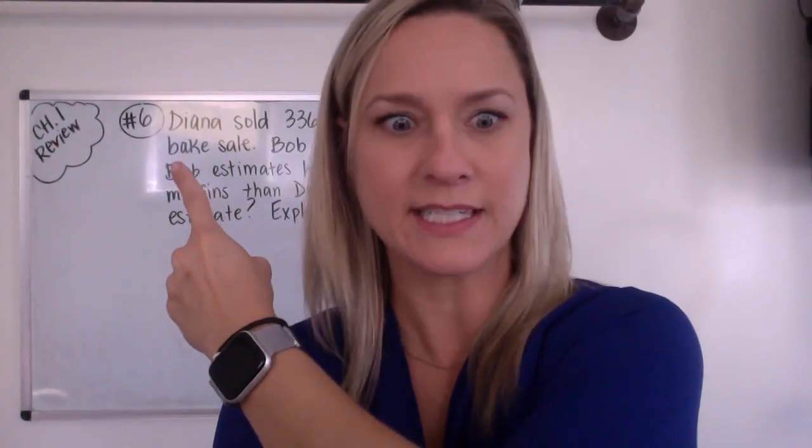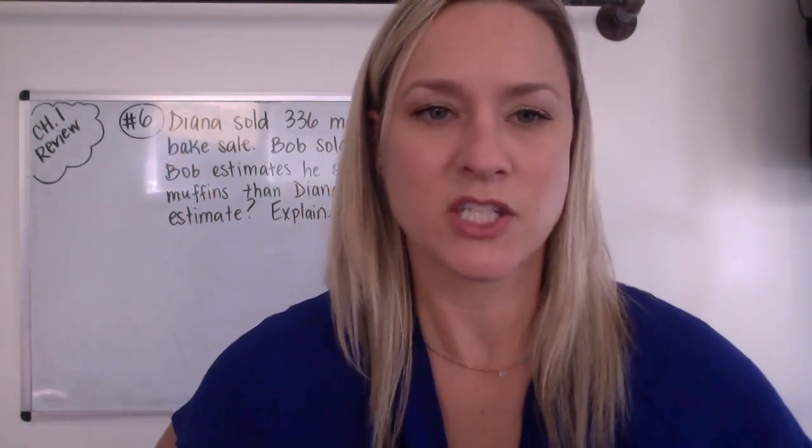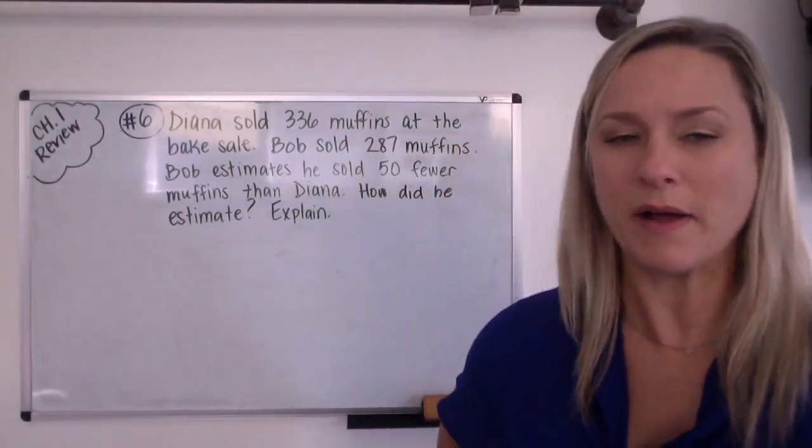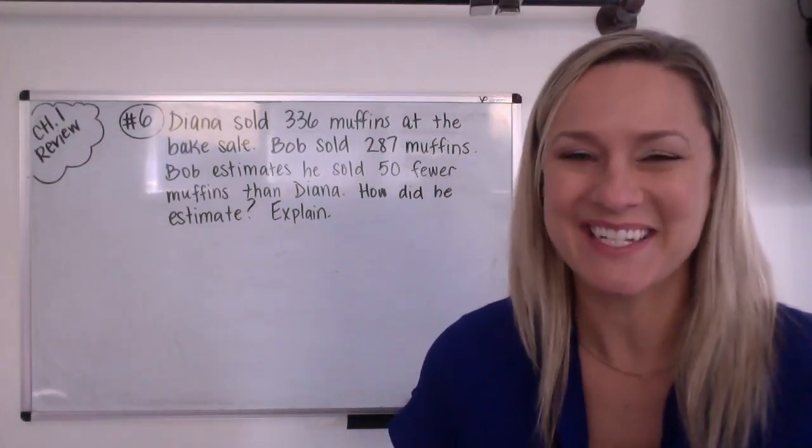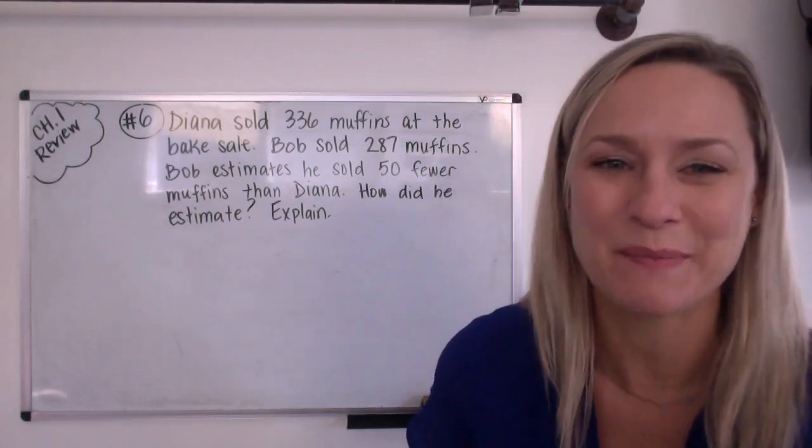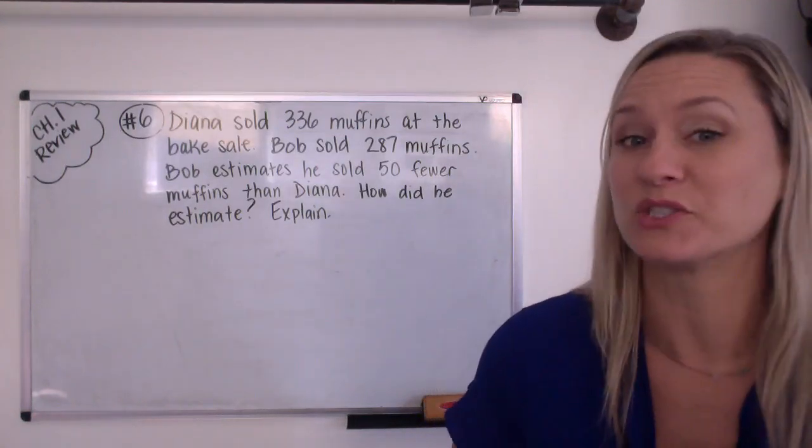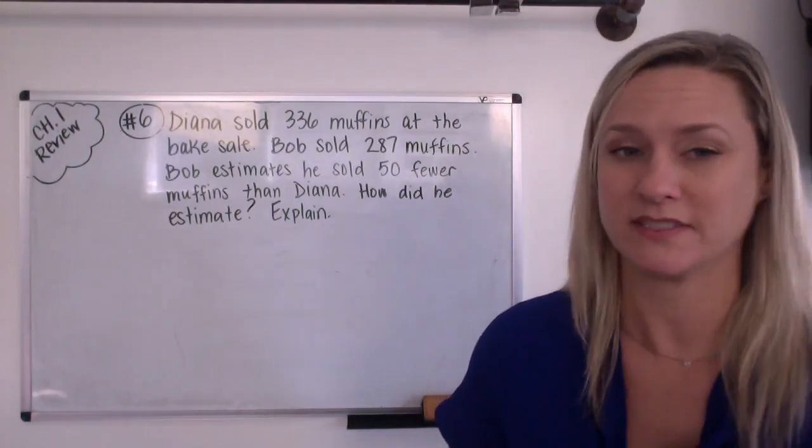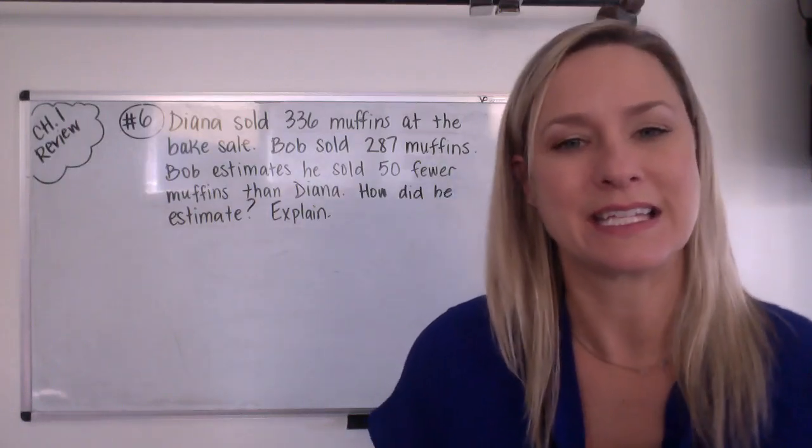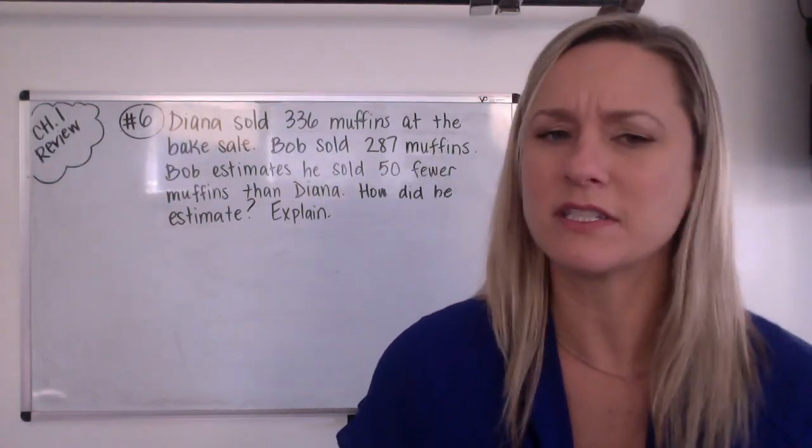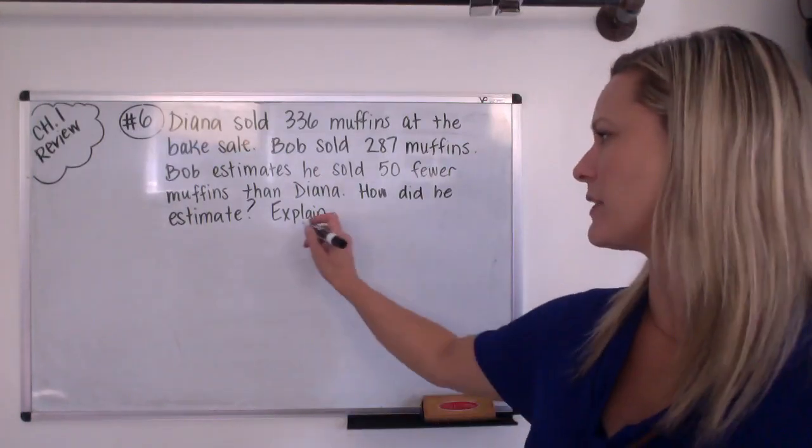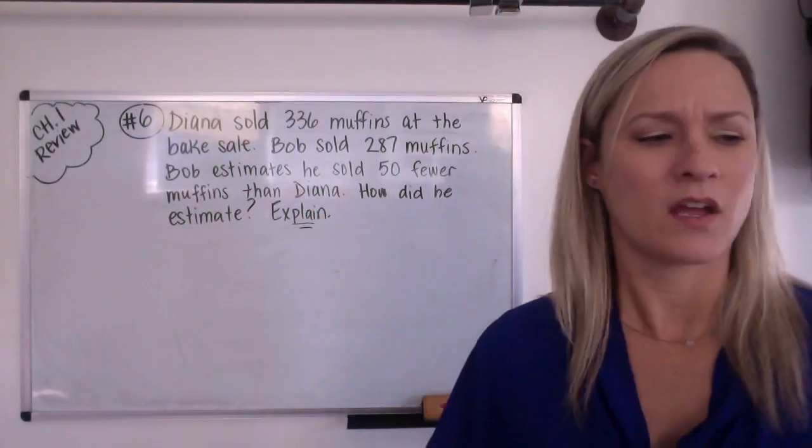We're back. It's number six. Okay, so we have got to read about Diana and Bob. They had a bake sale. Okay, Diana sold 336 muffins at the bake sale. Bob sold 287 muffins. Bob estimates that he sold 50 fewer muffins than Diana. How did he estimate? We have to make sure we explain.